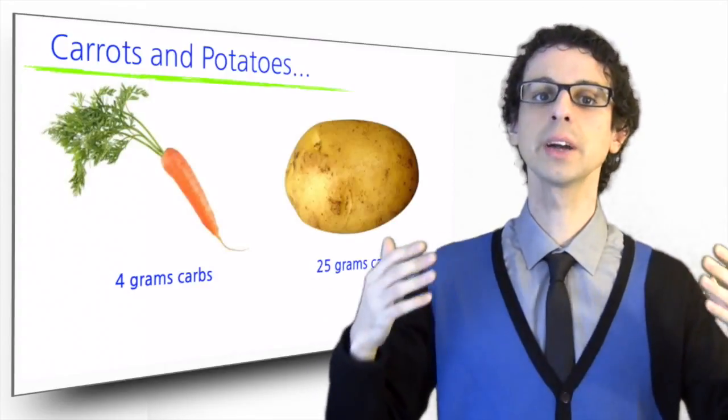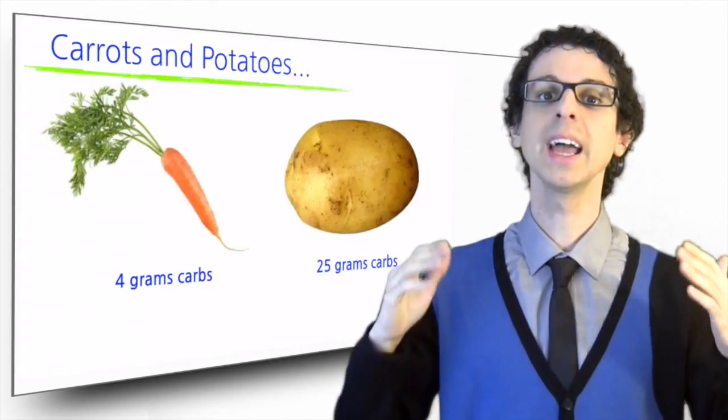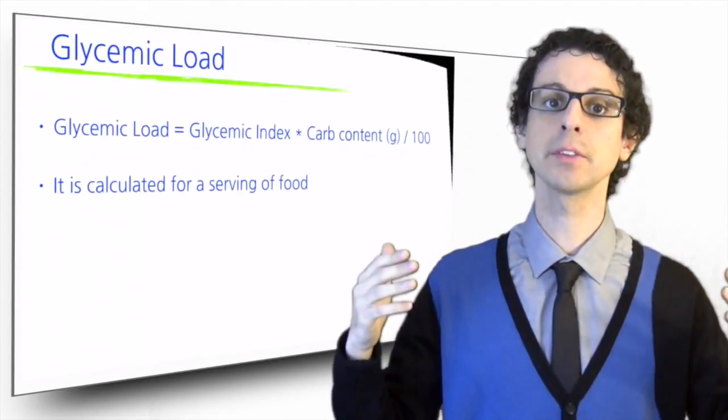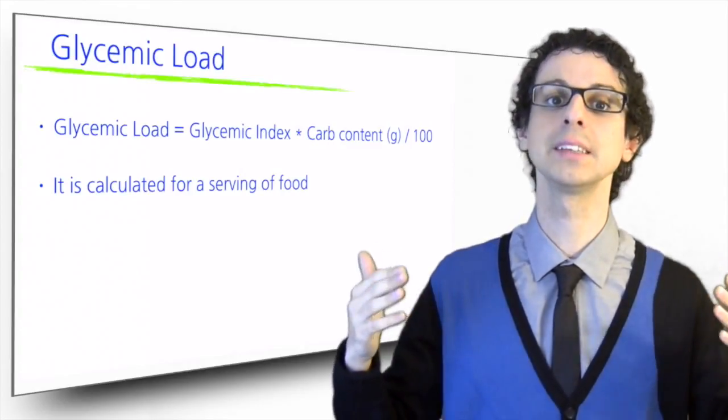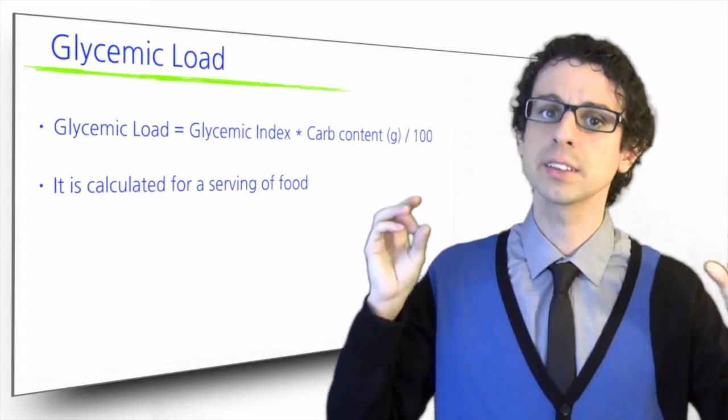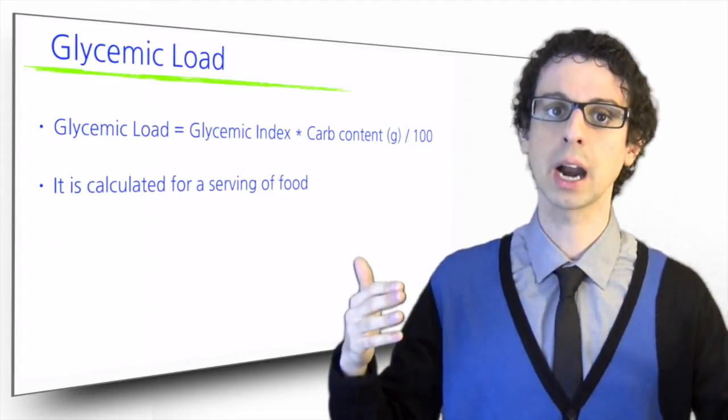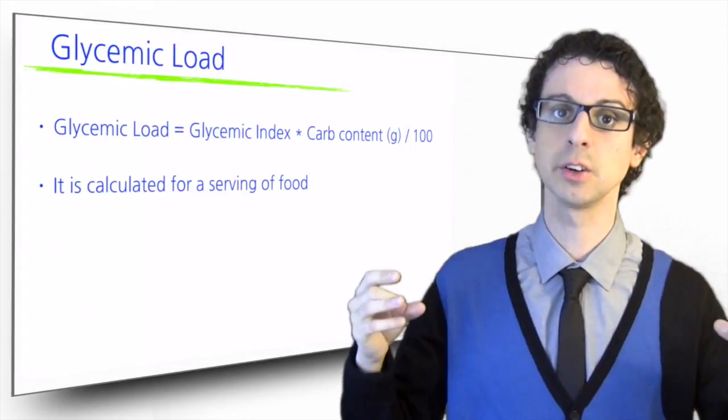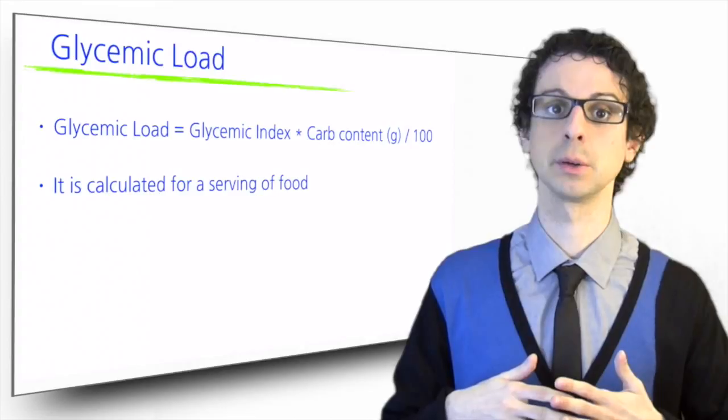To take into account both the glycemic index and the total amount of carbs, a group of researchers from Harvard University proposed in 1997 the concept of glycemic load. It is very simple. It's just the glycemic index of a food times the amount of digestible carbs contained in a standard serving of that food, divided by a hundred, just to get rid of some zeros.